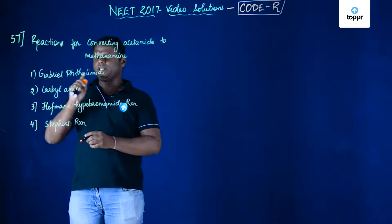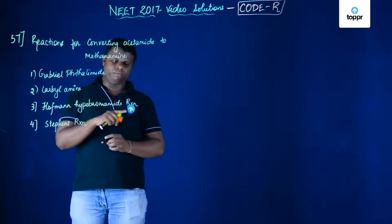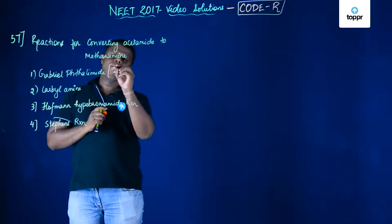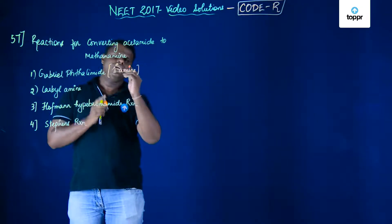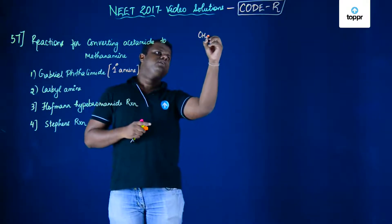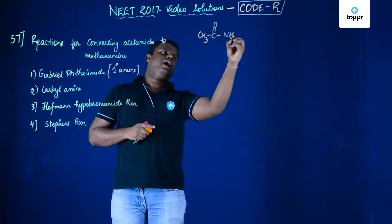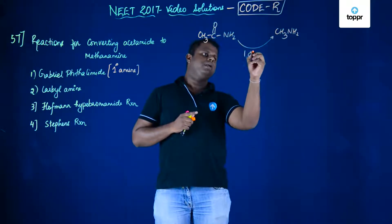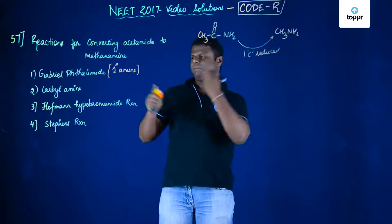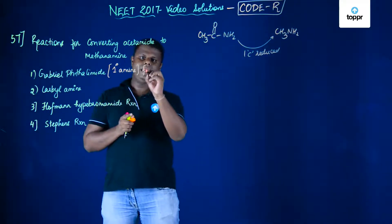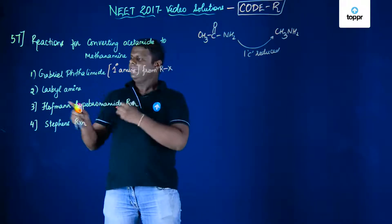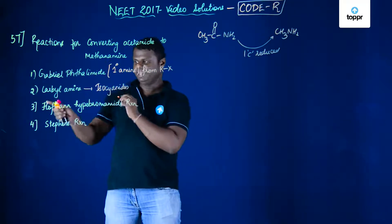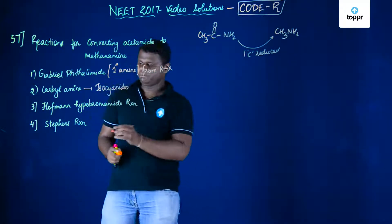You have been given four options: Gabriel phthalimide, carbylamine, Hoffman hypobromide reaction, and Stephens reaction. Gabriel phthalimide is the incorrect answer because it is basically for the preparation of primary amine containing the same number of carbon atoms. Acetamide is CH3C(=O)NH2 and methanamide is CH3NH2, so one carbon is reduced. Gabriel phthalimide is for preparation of primary amine from alkyl halide. Carbylamine is for the formation of isocyanides, which is a detection test. Stephens reaction is nothing but a reduction reaction.